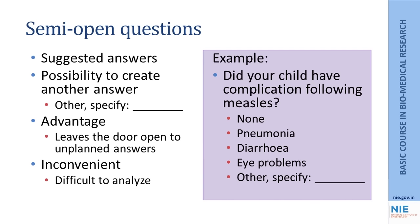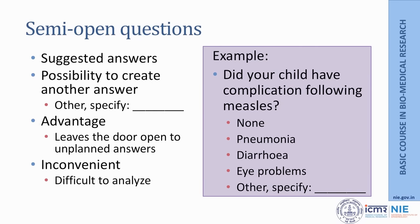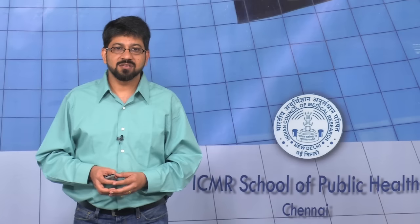We could also have what are called semi-open questions, where you have a question with several suggested responses, but there is one option kept open — the most common one being 'others.' For example, did your child have a complication following measles? It could be no complication, pneumonia, diarrhoea, eye problems, or some other complication not common enough to warrant its own category. This gives an option to the respondent to mention things other than what is in the list, leaving the door open for unplanned answers. However, if there are too many of these responses, it may be difficult to analyze.